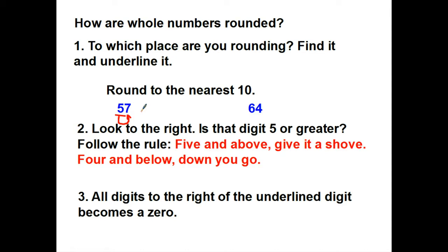Five and above, give it a shove, four and below, down you go. So seven is greater than five, which is going to cause this to be shoved up to six. And then the digits behind become a zero.